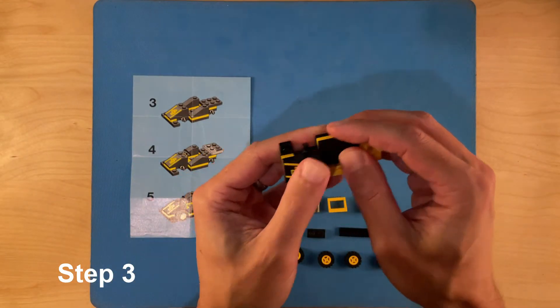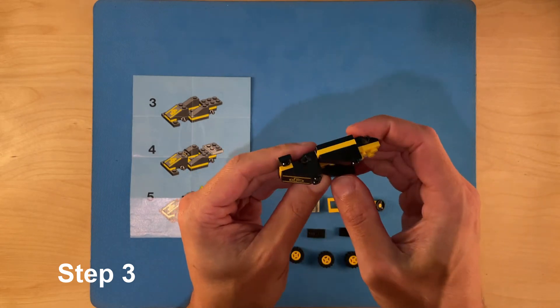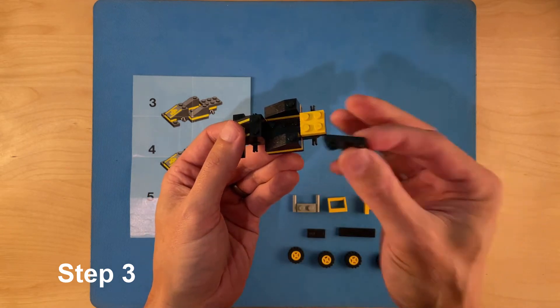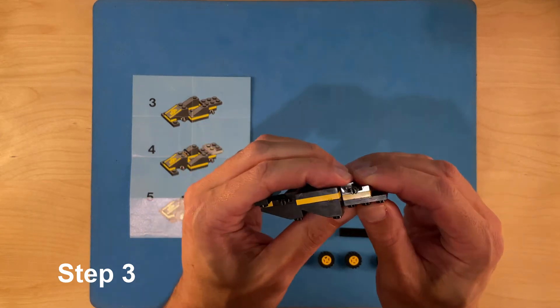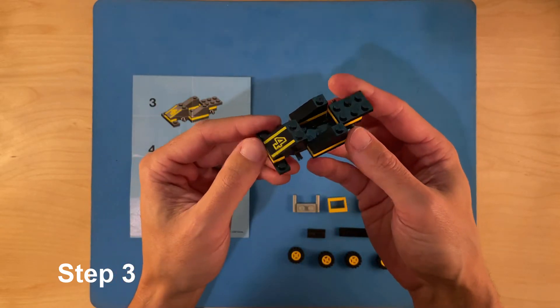And these two sort of side wings, I guess you could call them. And this 2x3 black plate goes at the back and it's pretty much taking shape.